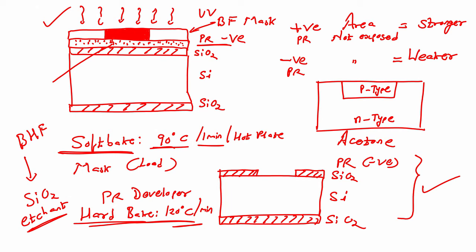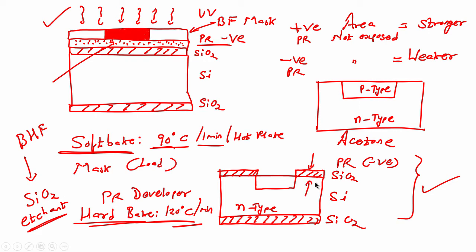Now I have a window. Through this window we can dope p-type material into the n-type silicon. The SiO₂ will act as a mask and will not allow the dopant to enter the protected region — it will act as a mask in this particular substrate.